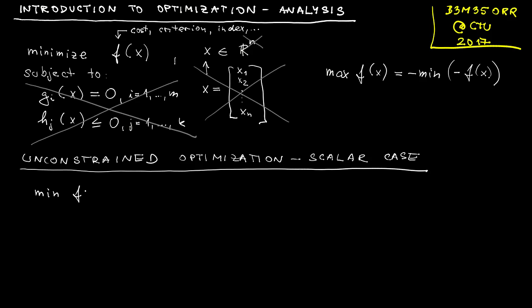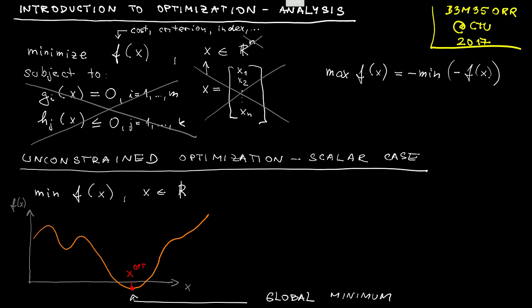So the problem may already look familiar. We will consider a function, for instance, of this shape, and try to find x which minimizes the value of this function. Obviously, the minimizing x is identified right here. We will label it x_opt, and the corresponding value of the function is global minimum—with the obvious definition that global minimum is the value that for no other x you can achieve anything smaller.